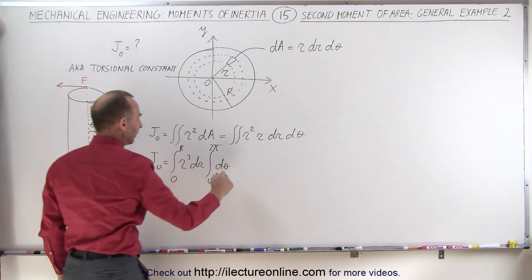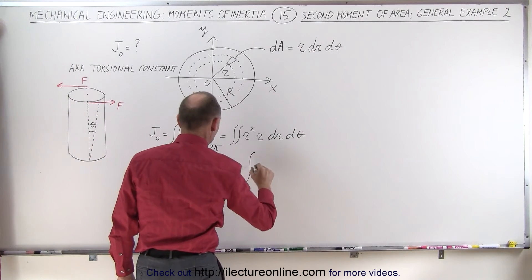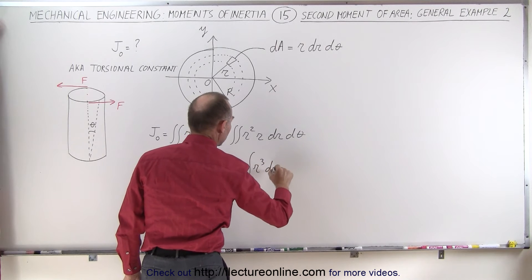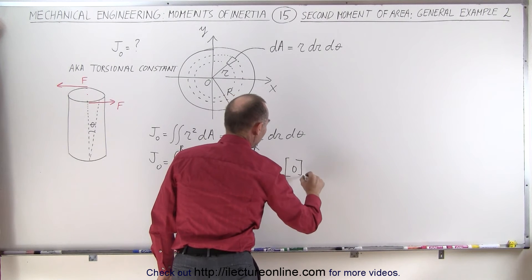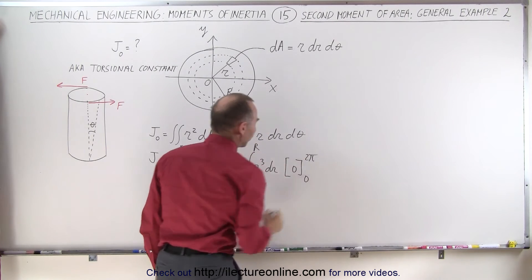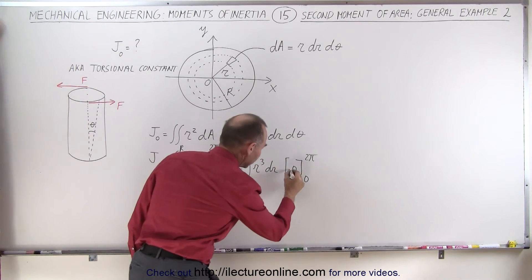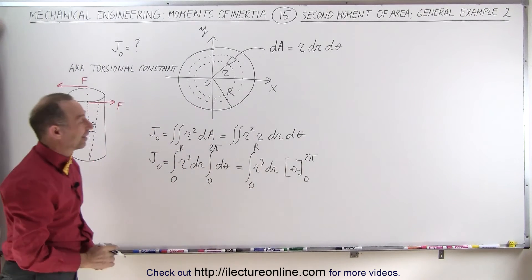So that's an easy integral. This is equal to the integral of r cubed dr from zero to r, times theta evaluated from zero to two pi. Of course, theta, not zero.